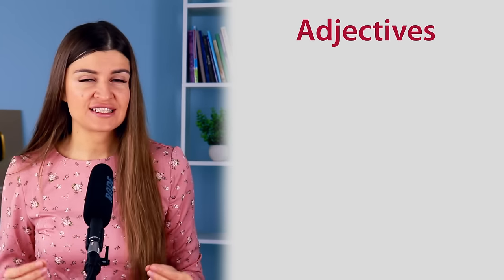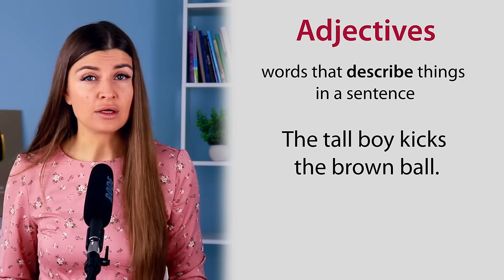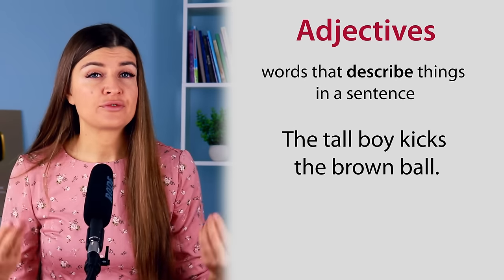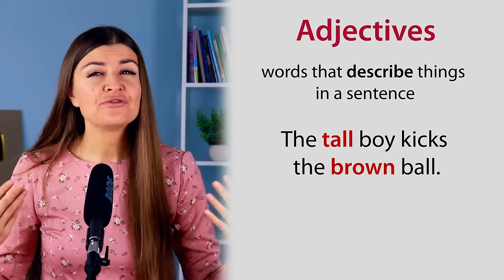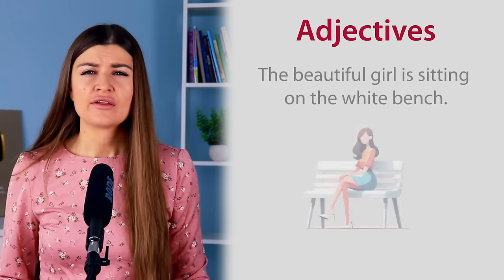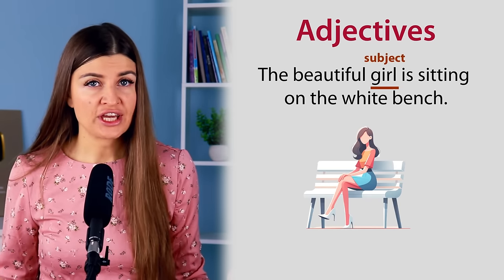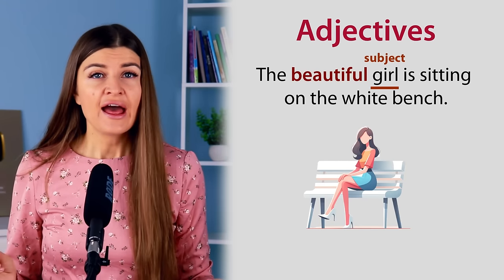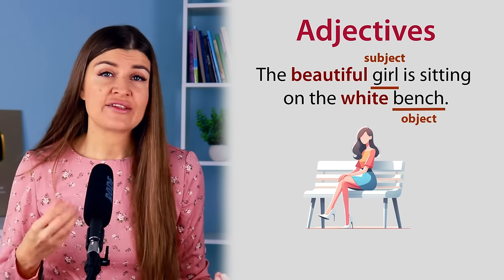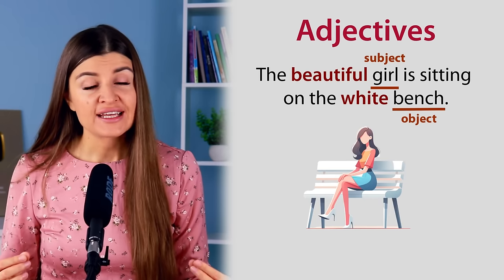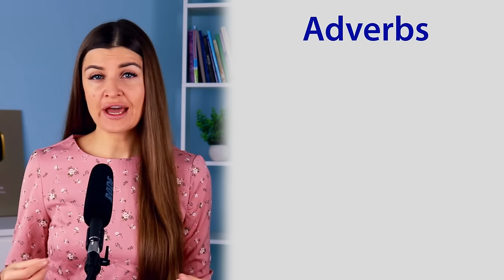We also have adjectives, which are words that describe things in a sentence. For example, the tall boy kicks the brown ball — tall and brown are adjectives. Adjectives usually come before what they are describing. The beautiful girl is sitting on the white bench. The girl is the subject; beautiful is the adjective and it goes before the subject. Bench is the object; white is the adjective and it describes the object and comes before it.